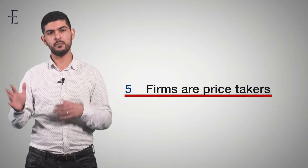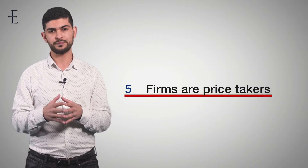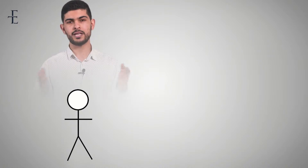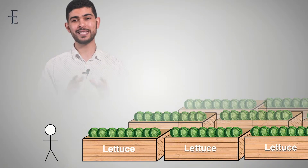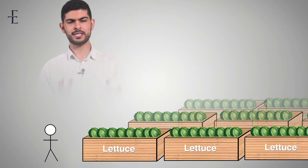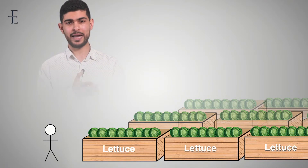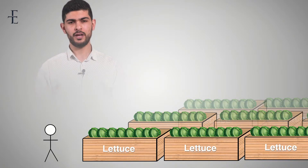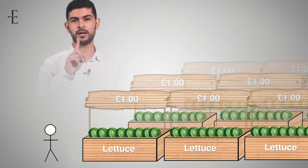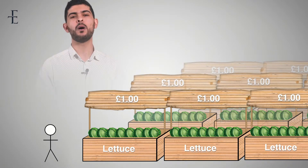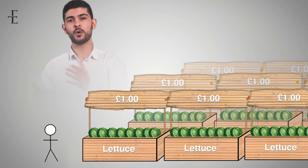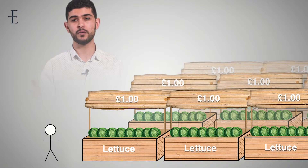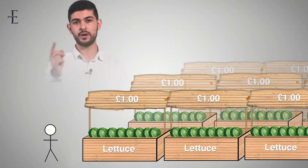Let's explain number five with a hypothetical scenario. You walk into a room — hypothetically, let's say that room is a country. There are 50 people in that room, all selling lettuce. The lettuce looks the same, tastes the same, it's not packaged, it's identical. Let's say that lettuce costs one pound and they're all selling it for one pound. When you enter that room, you're perfectly informed because you can easily look at all the prices — there's no effort involved. And they're also perfectly informed because they can see each other's prices.